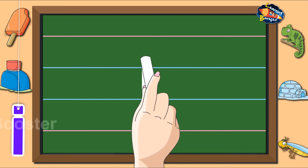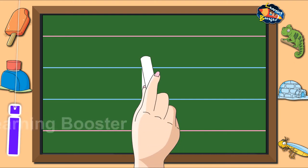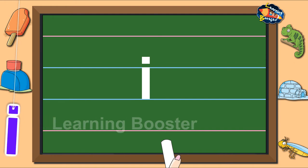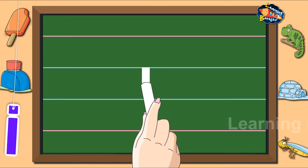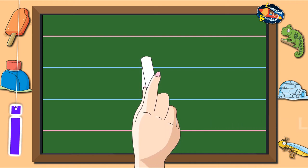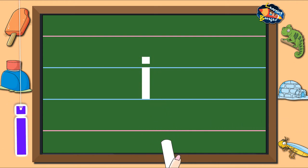Then go a little above the waistline and make a dot. Let us look at it once more. One standing line and a dot on top makes letter i.